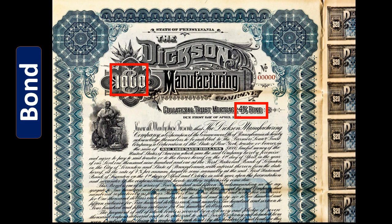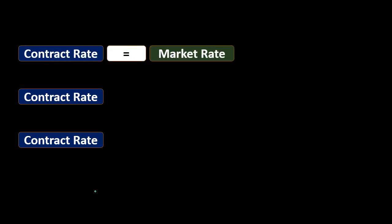Why would anyone accept that? Because of the difference in interest rates — the difference is made up by the fact that the market rate is currently different from the rate stated on the bond. This gives us three types of options: the first and easiest is where the contract rate is equal to the market rate.